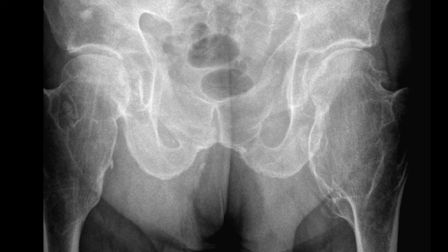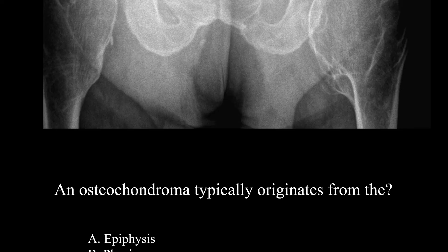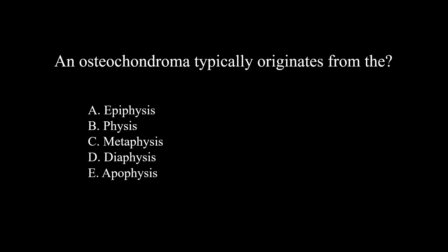A dedicated video on HME will be made at a later date. Now for a couple of review questions: an osteochondroma typically originates from the — epiphysis, physis, metaphysis, diaphysis, or apophysis? The correct answer is the metaphysis.